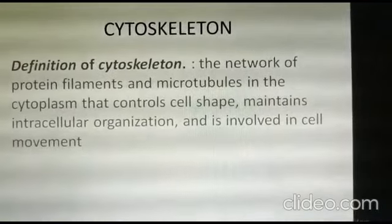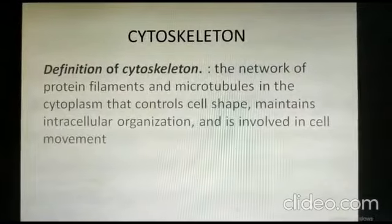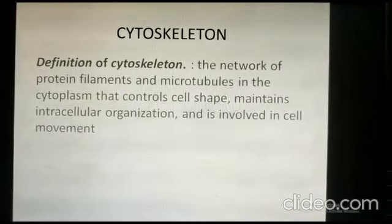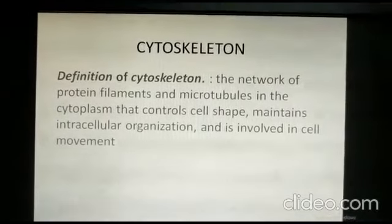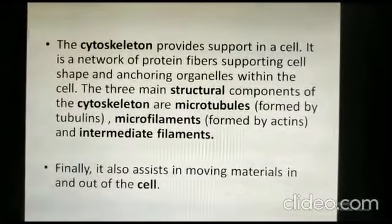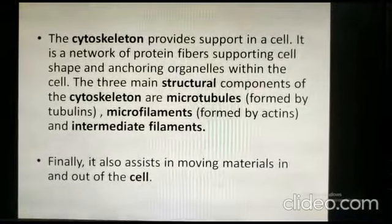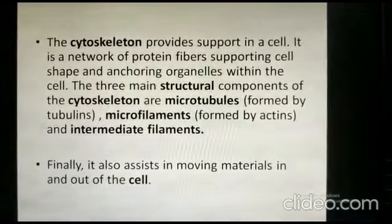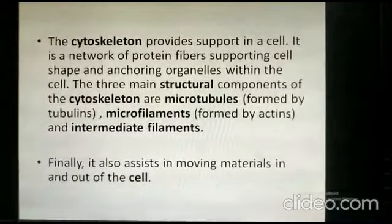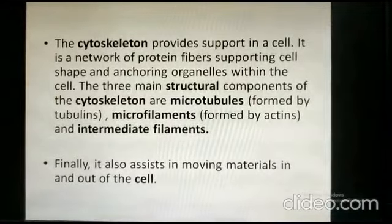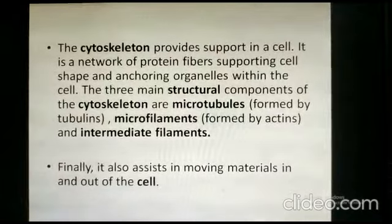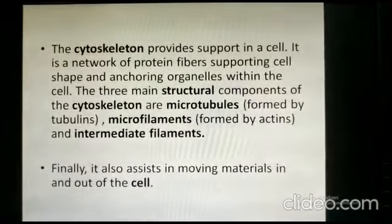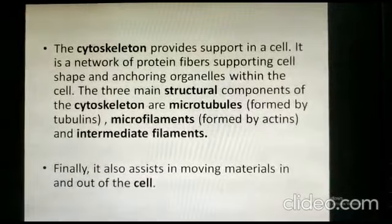Definition of cytoskeleton: the network of protein filaments and microtubules in the cytoplasm that controls cell shape, maintains intracellular organization, and is involved in cell movement. What is the cytoskeleton? Just as our skeleton supports the body, the cytoskeleton provides support in a cell. It is a network of protein fibers supporting cell shape and anchoring organelles within the cell.